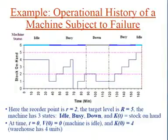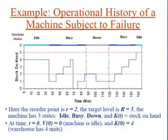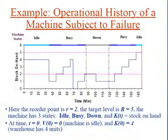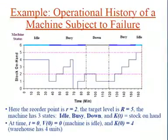The first customer arrives at time t equals 35 with a demand of 3 units. Since the stock on hand can satisfy this order, inventory is depleted by 3 units, resulting in k(35) equals 1. Because this crosses below the reorder point, the machine changes status from idle to busy and starts producing units.